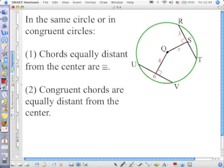In the same circle or in congruent circles: (1) Chords equally distant from the center are congruent. (2) Congruent chords are equally distant from the center. Chords that are equally distant from the center are congruent, and vice versa. If chords are congruent, then they are equally distant from the center.